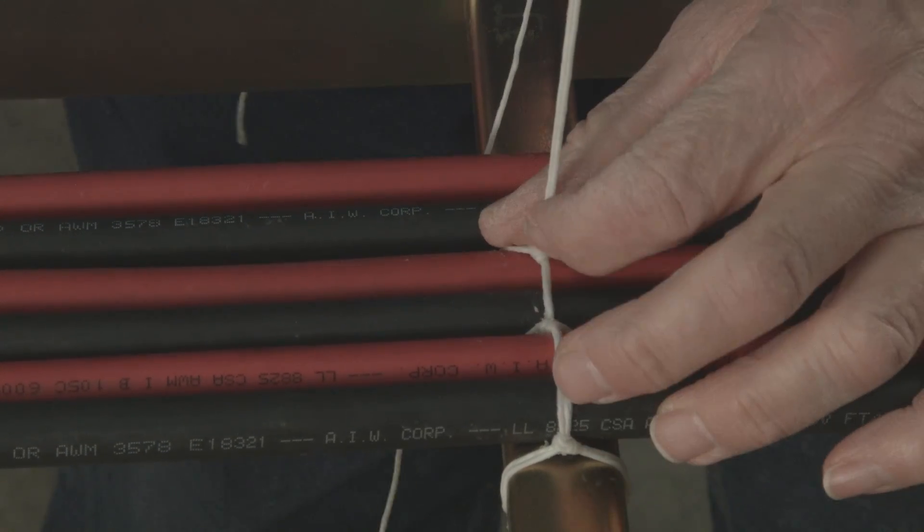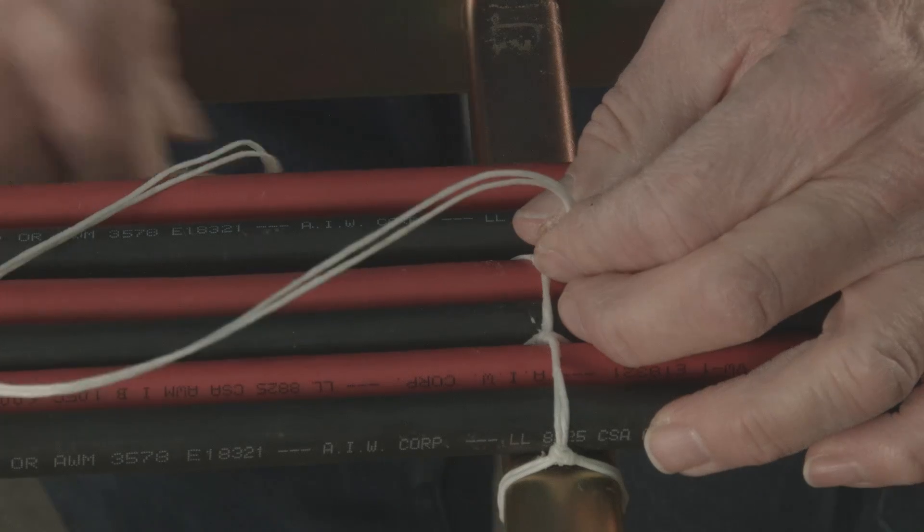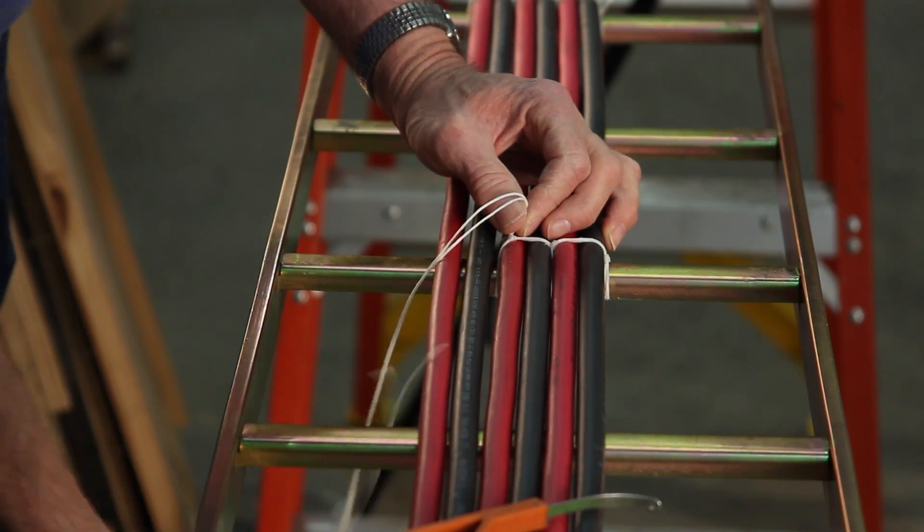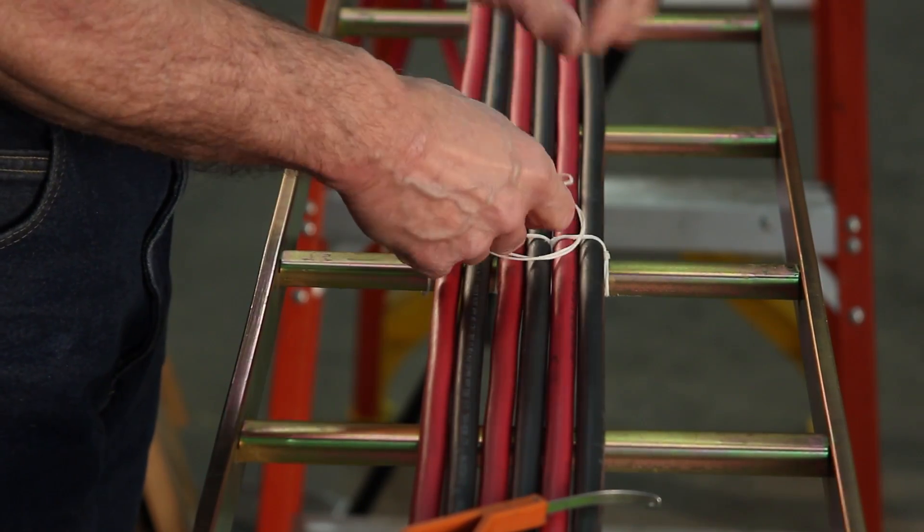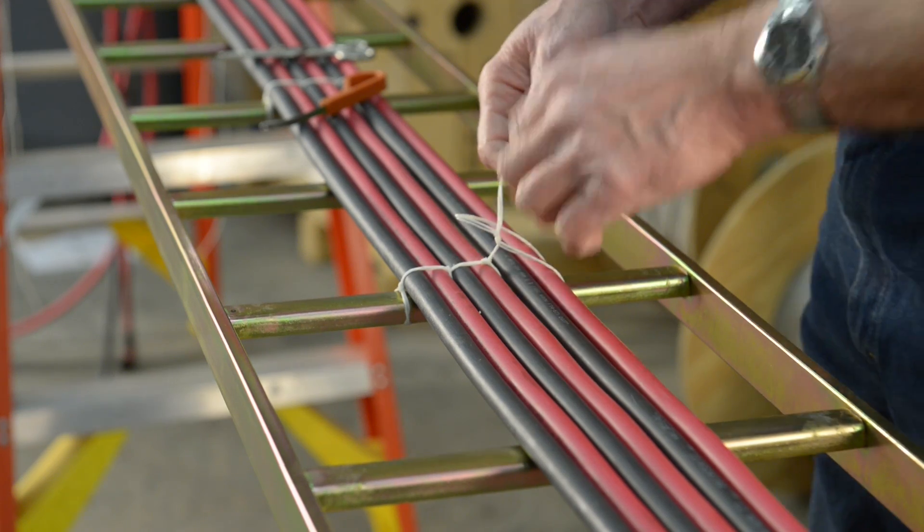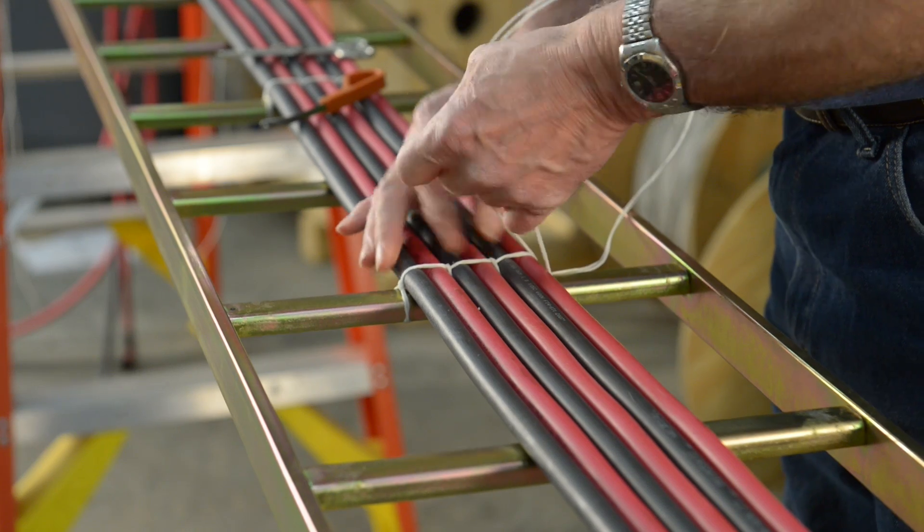And pull your string here, and slide your knot down the short ways, go back over your wire, under the rung, back up, over top the string, pull it through, pull that knot down.